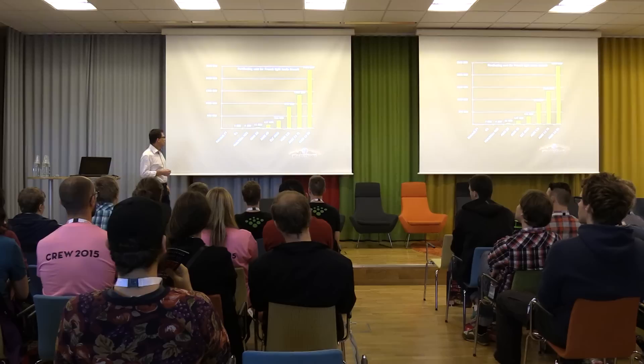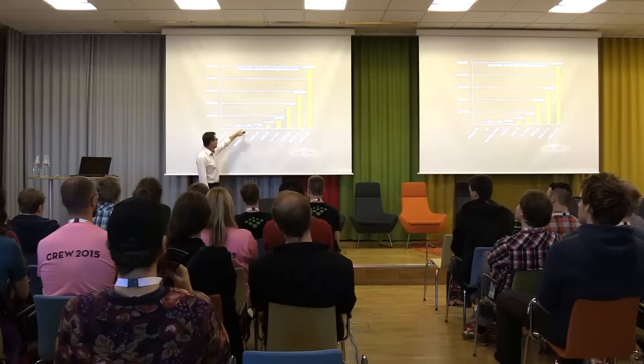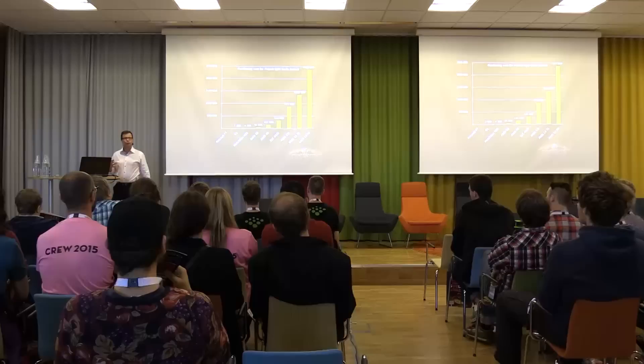This is an example from World of Tanks — just one sub-branch of their progression tree for the light French tanks. Look at the price difference: the first one you can buy is just 3,800 coins, and then the top one is over 2 million. So to buy that one, you need to play a lot. Those are techniques used to create frustration, and they do work.